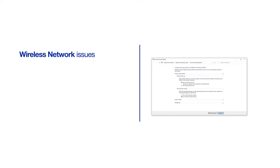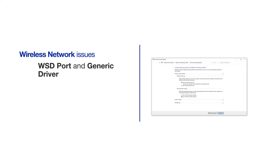Some Windows computers are set up to automatically install devices found on your network. When this occurs, your Brother device will be set up with a Windows WSD port and a generic driver. These are common causes for offline issues with your Brother device.